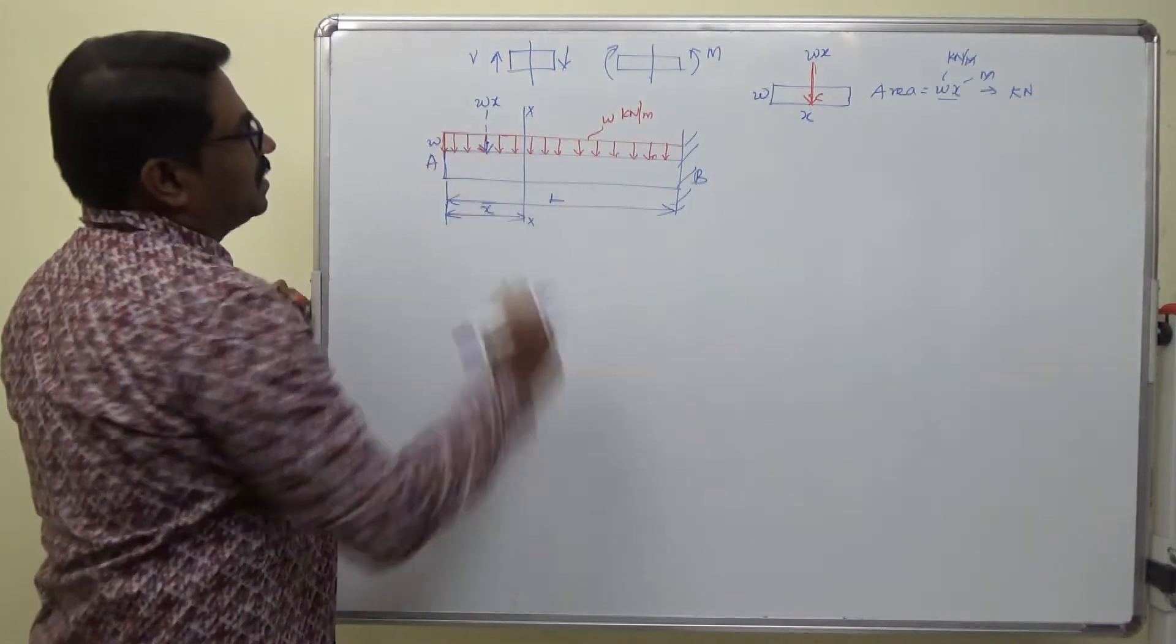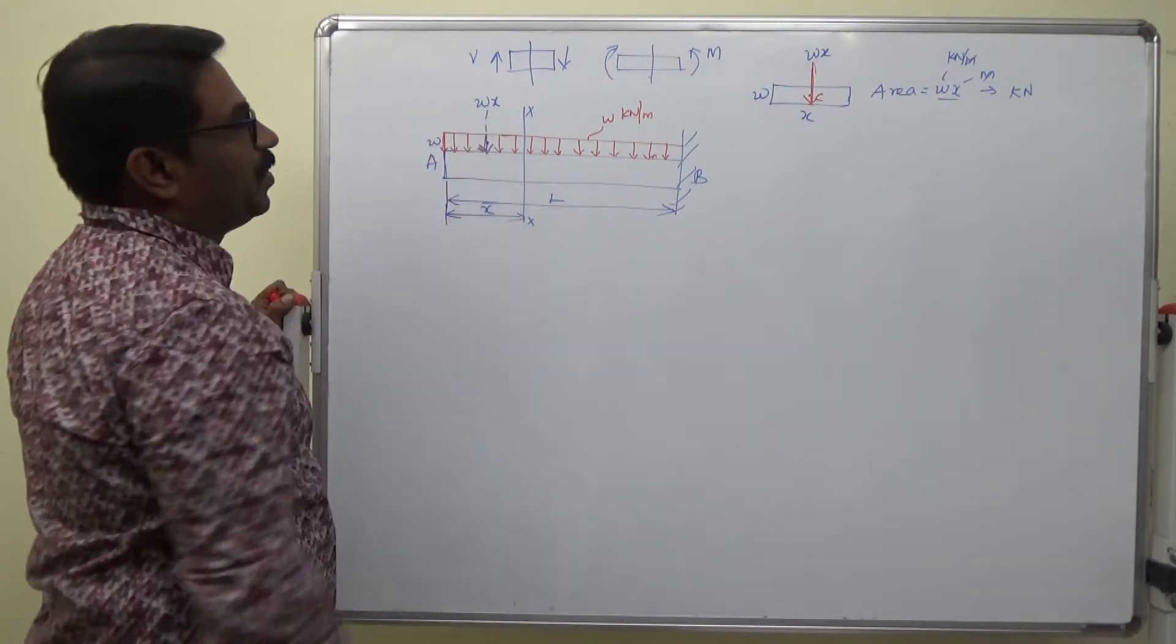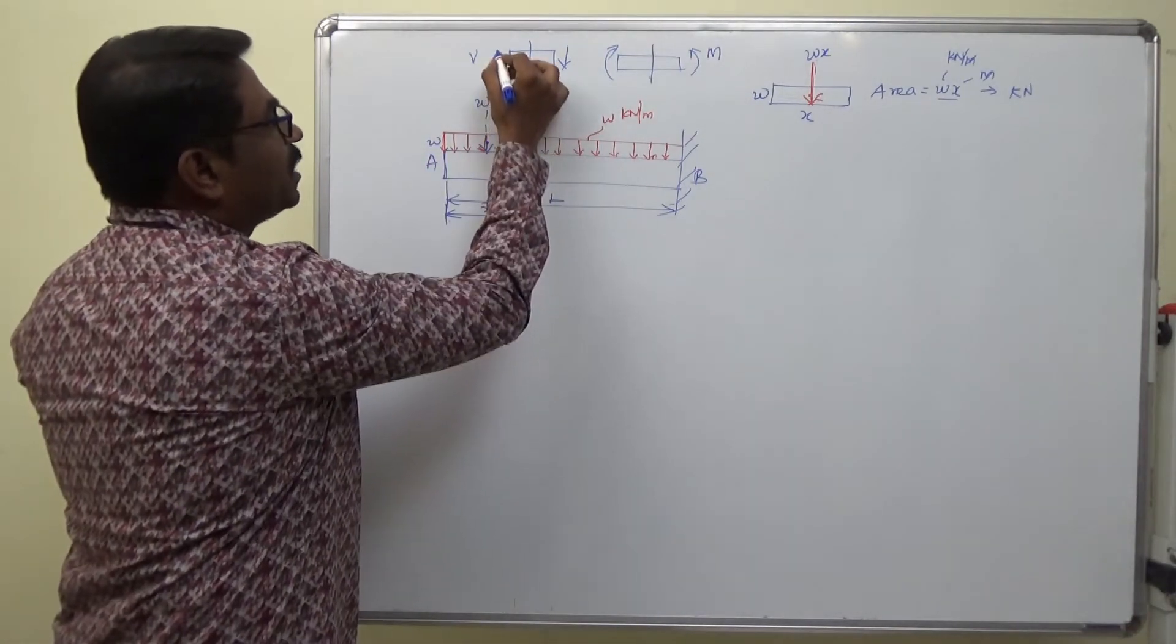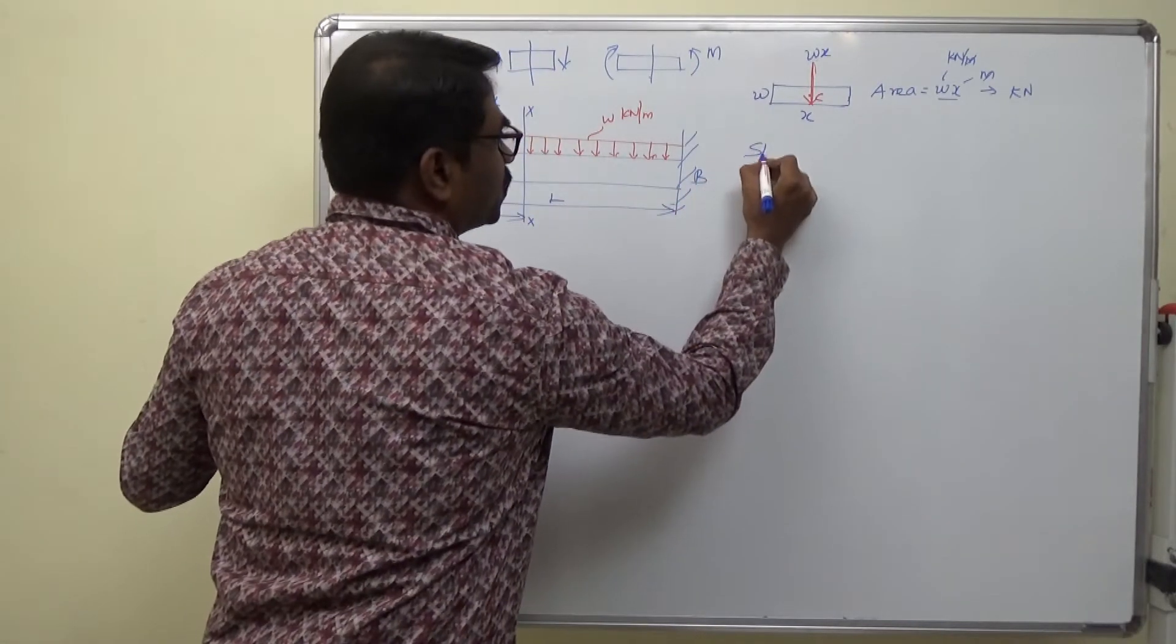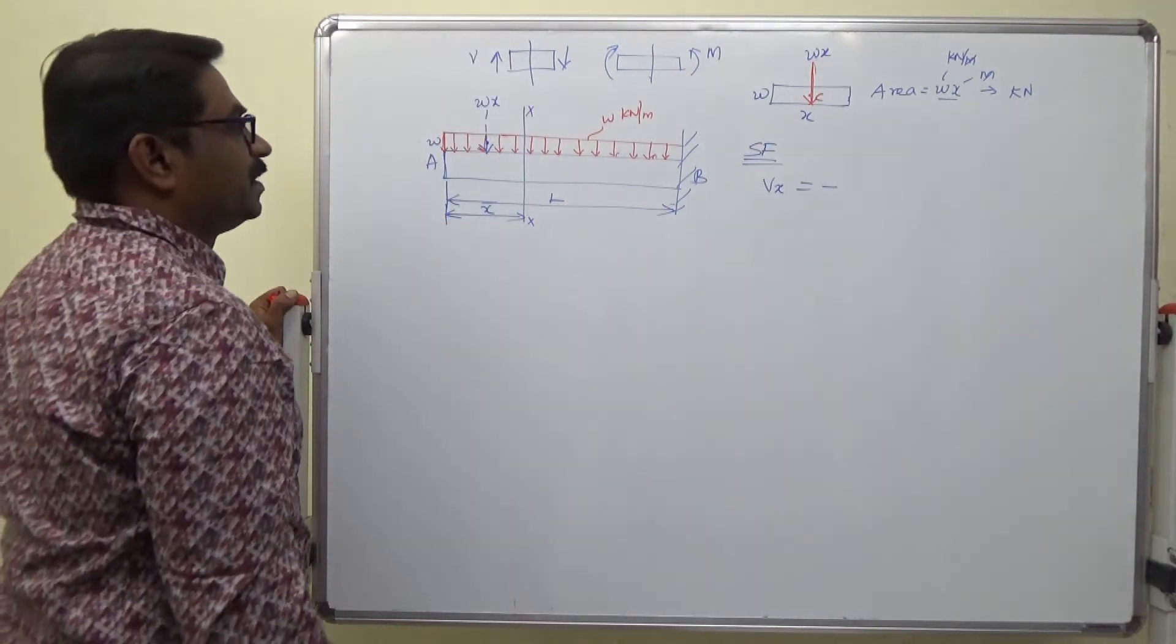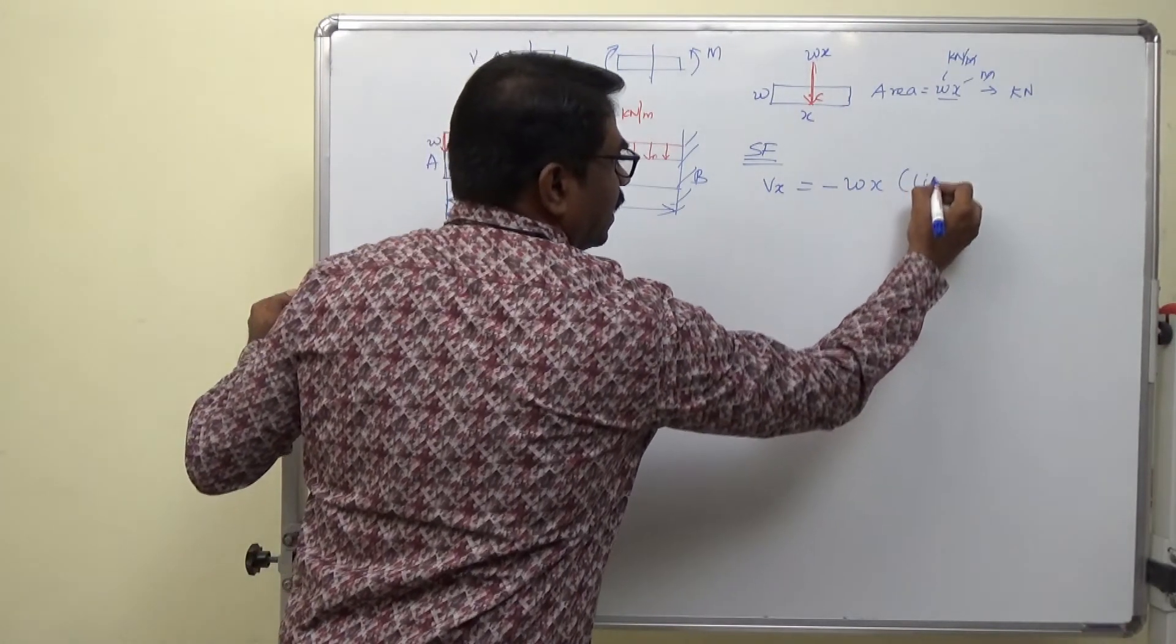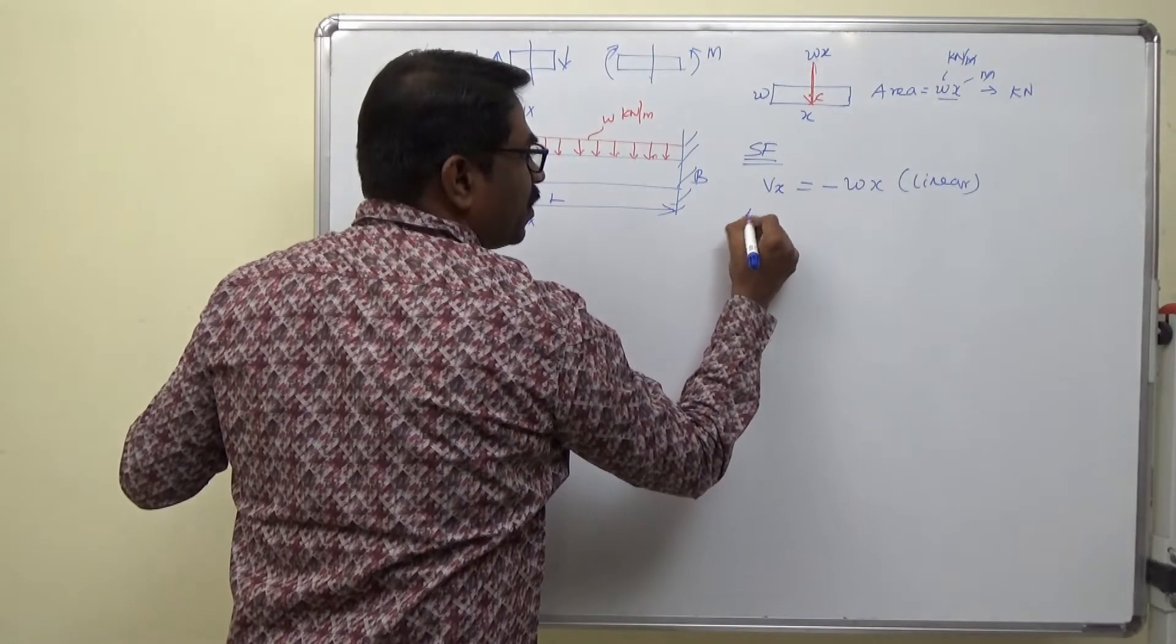To the section left hand side, we have only one force W x, and to the left upward is positive. Since it is downward, the shear force is negative W into x. It is a linear function.